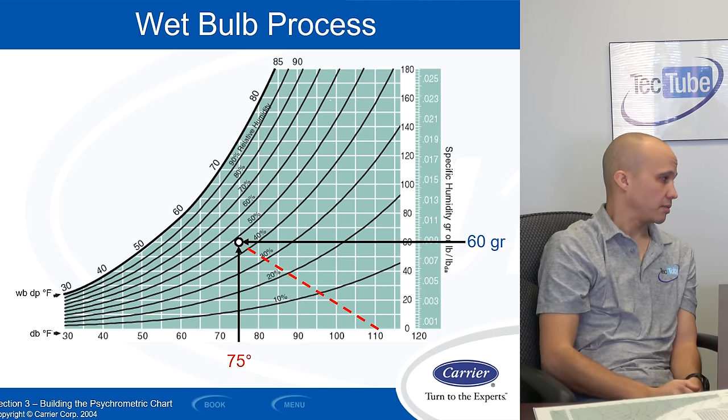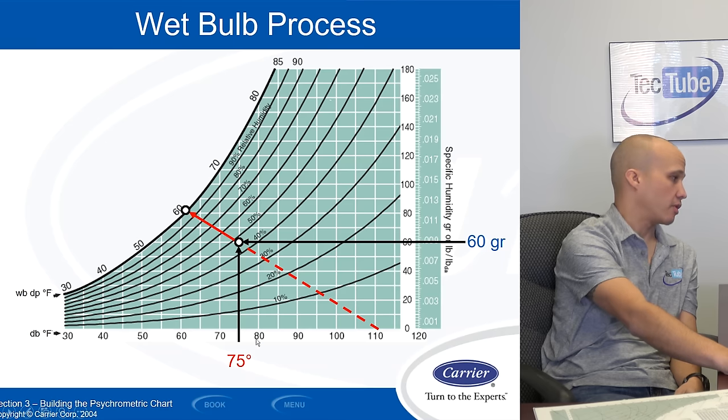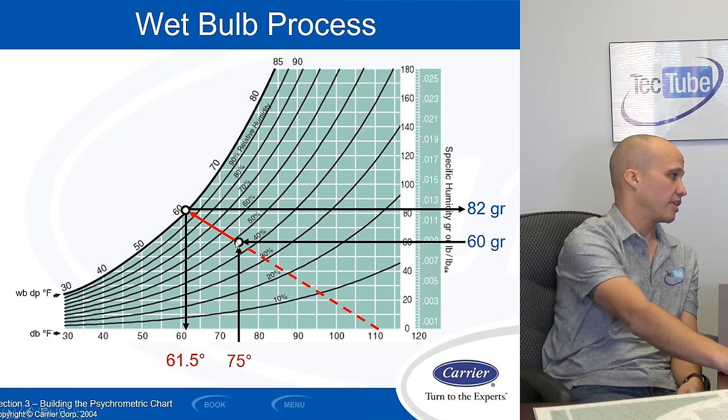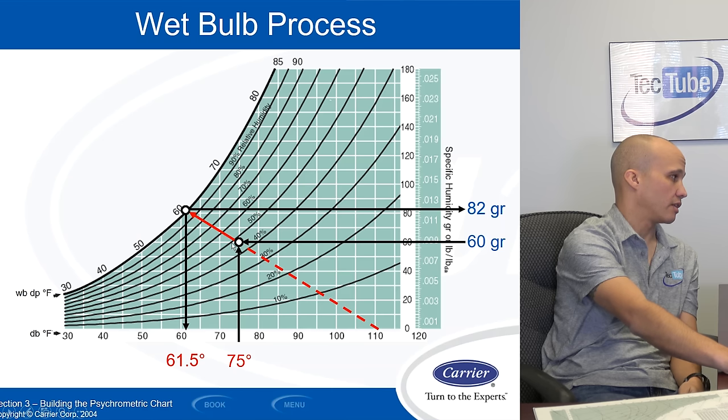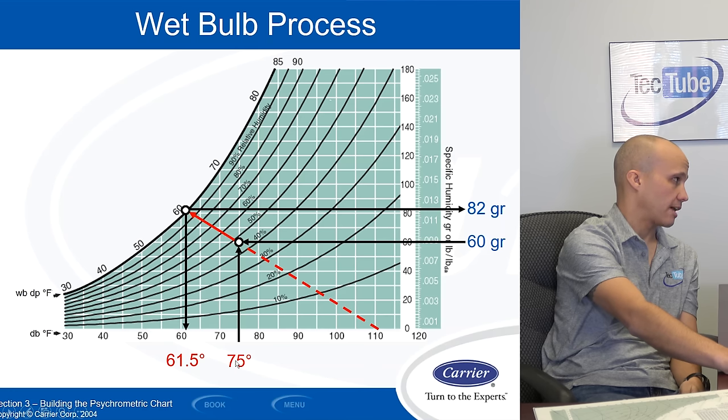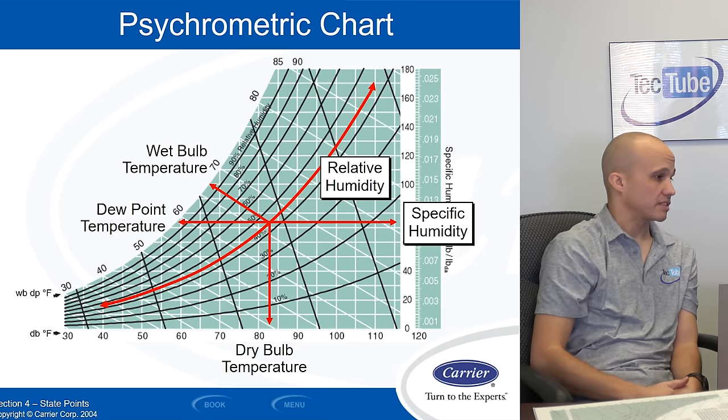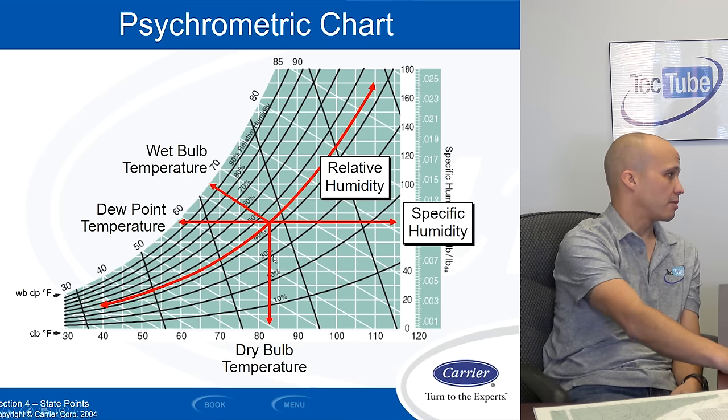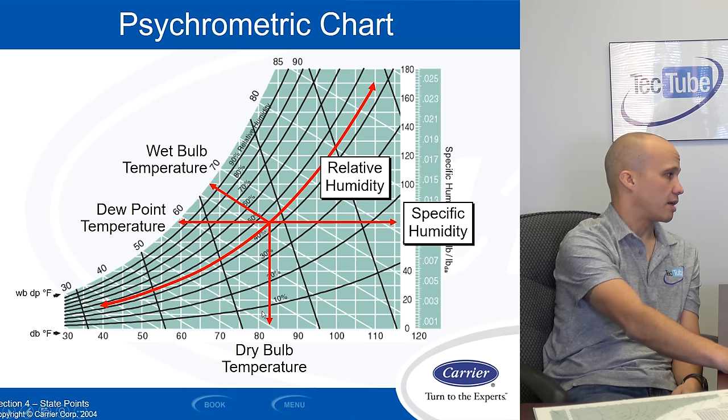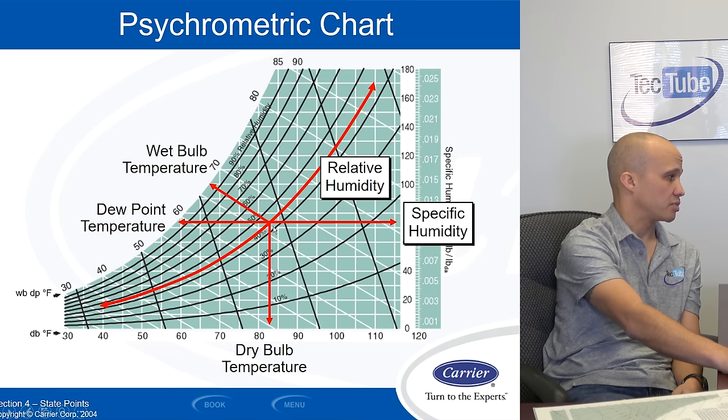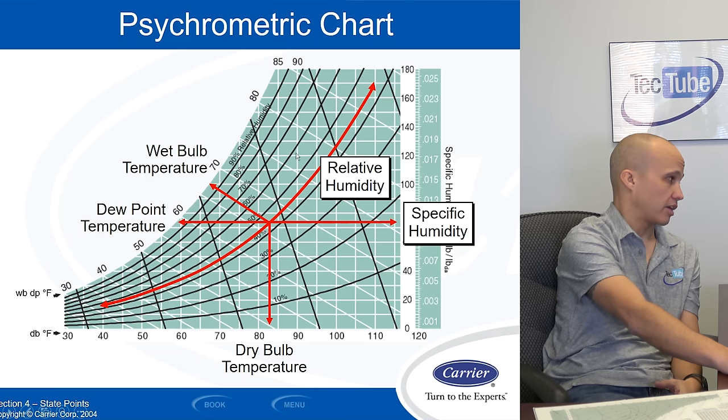The wet bulb is right on the chart in a little bit of a different way. So that same point we talked about before, 75 degrees with 60 grains of moisture. If I read across this way, I get the dew point of 53. But if I read up this 45 degree angle line, I get to a wet bulb of 61. So wet bulb is read on the diagonal line. Dew point is read straight across. Temperature is read straight down. So if you look at all of them at the same time, wet bulb is measured on the diagonal. Dew point straight to the left. Dry bulb straight down. Relative humidity is the curved line. Specific humidity, actual humidity, is horizontally across to the right.